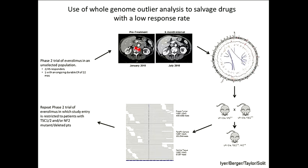The take-home message is not that we should be doing off-indication treatment with CHK1 inhibitors in patients with RAD50 mutations. What we're suggesting is that you develop assays to look for these alterations so that you can do an iterative clinical trial to really answer the question: when you have this specific set of mutations, do you respond to this specific drug? Because we doubt that every patient with a TSC1 mutation is going to respond to everolimus, and we already know not every patient with an EGFR mutation responds to an EGFR inhibitor.